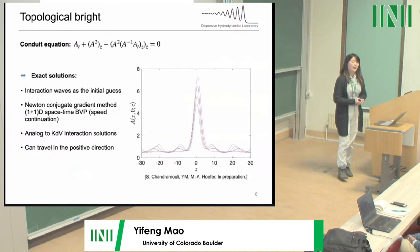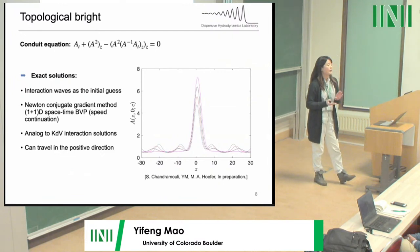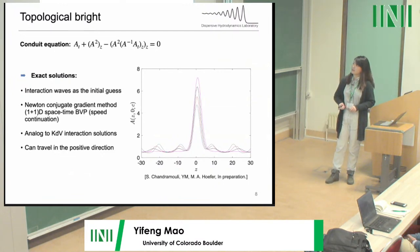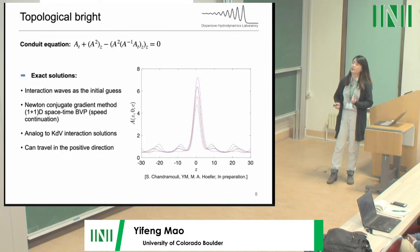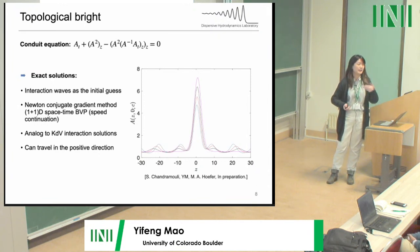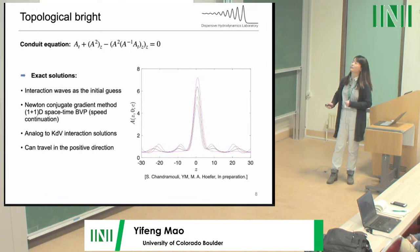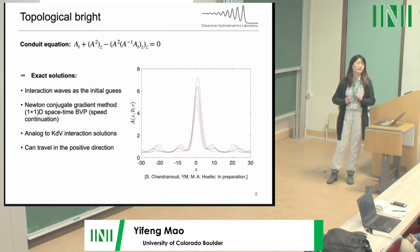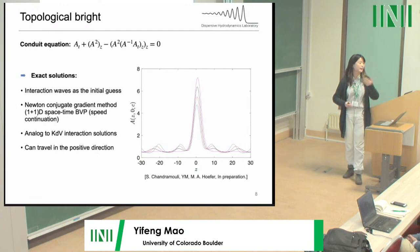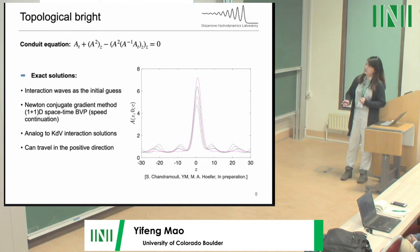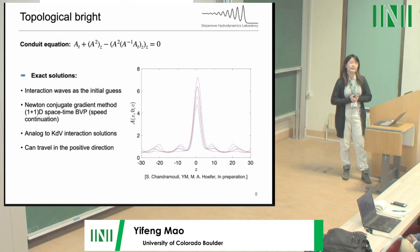To verify that the interaction waves are general solutions of the conduit equation, in recent work by Sathyanarayana, we took those interaction waves as initial guesses and used the Newton conjugate gradient method to solve the conduit 1+1D space-time boundary value problem. By performing speed continuation, we obtained a family of bright breathers — topological bright breathers with a periodic background — analogous to the KdV interaction solutions. This type of bright breather solution can travel in the positive direction, making experimental observation possible.